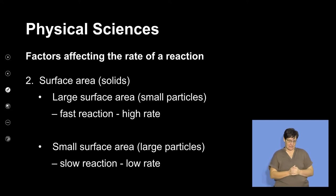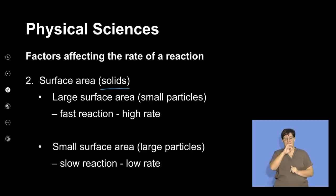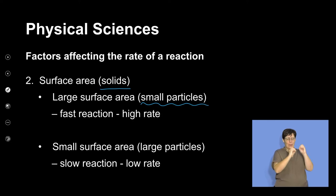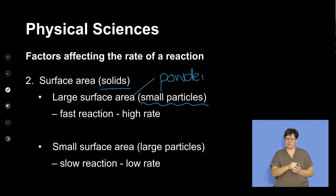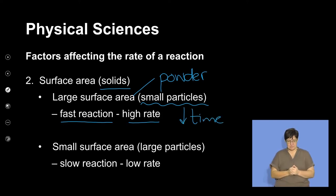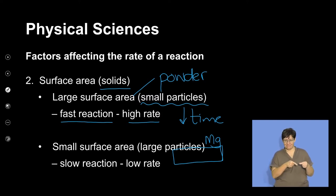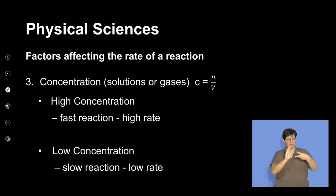The second factor is surface area. When we look at surface area, I want you to think in terms of solids. A large surface area means small particles — for now let's say powder. When we have a powdered surface, we will have a fast reaction with a high rate in a very short time frame. A small surface area means large particles, such as a piece of magnesium ribbon.